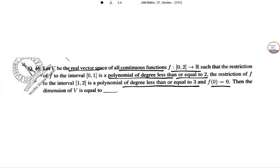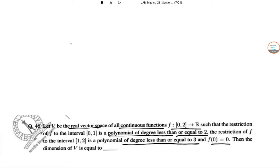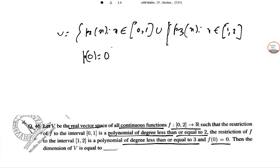So in this case V = {P2(x): x ∈ [0,1]} ∪ {P3(x): x ∈ [1,2]} and P(0) = 0. So obviously this is spanned by {1, x, x²}.